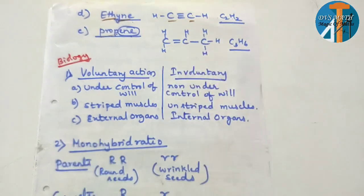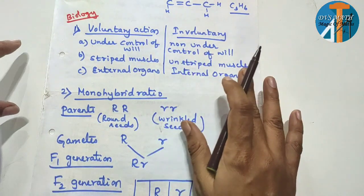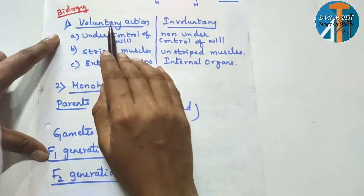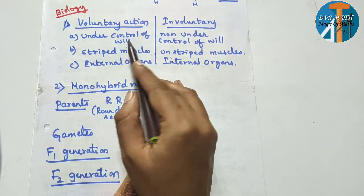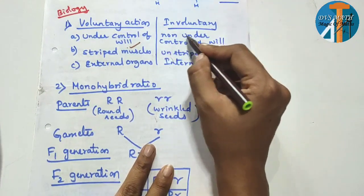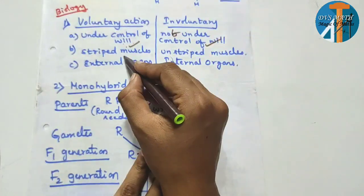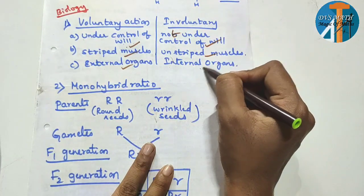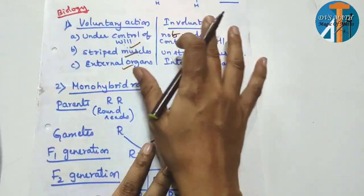Now biology. I am not a biology teacher, but I can tell you the points. Voluntary action and involuntary action: voluntary action is under the control of will; involuntary action is not under the control of will. Voluntary action involves striped muscles; involuntary action involves unstriped muscles. Voluntary action is connected with external organs; involuntary action is connected to internal organs.